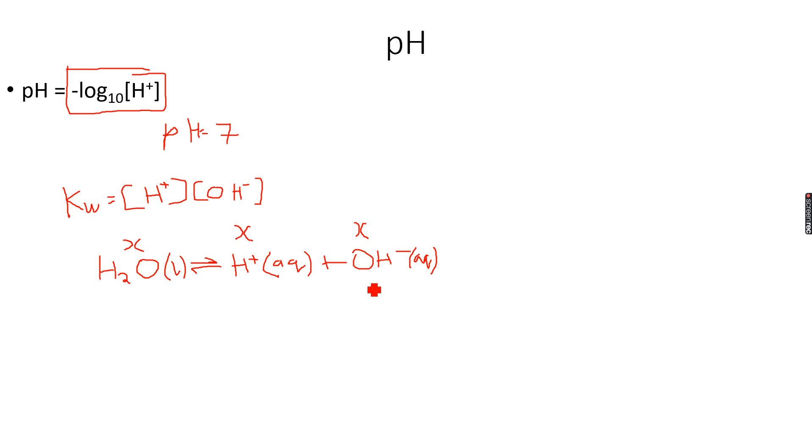As you can see, the concentration of H plus and OH negative is the same. I can basically write Kw is equal to H plus squared. Because I know that in this case the concentration of H plus and OH negative is the same. I've written Kw is equal to H plus squared because the concentration of H plus is the same as the concentration of OH negative.